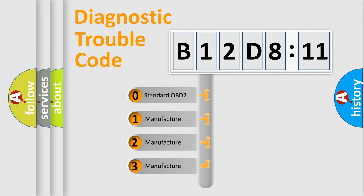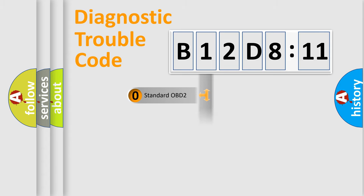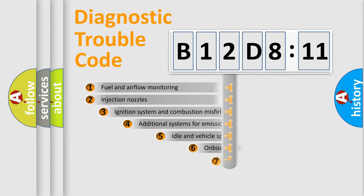If the second character is expressed as zero, it is a standardized error. In the case of numbers 1, 2, or 3, it is a more specific expression of the car manufacturer error.